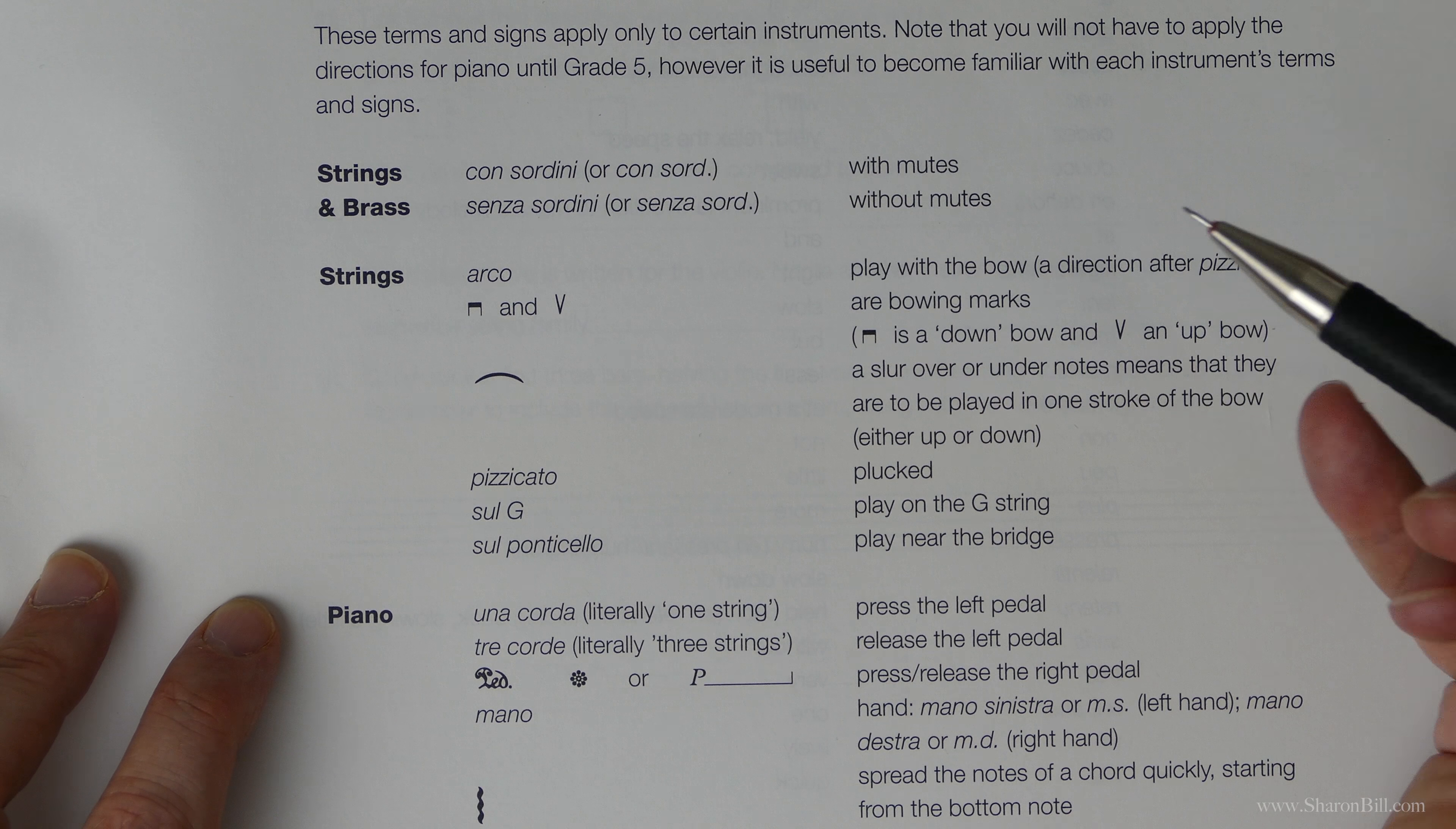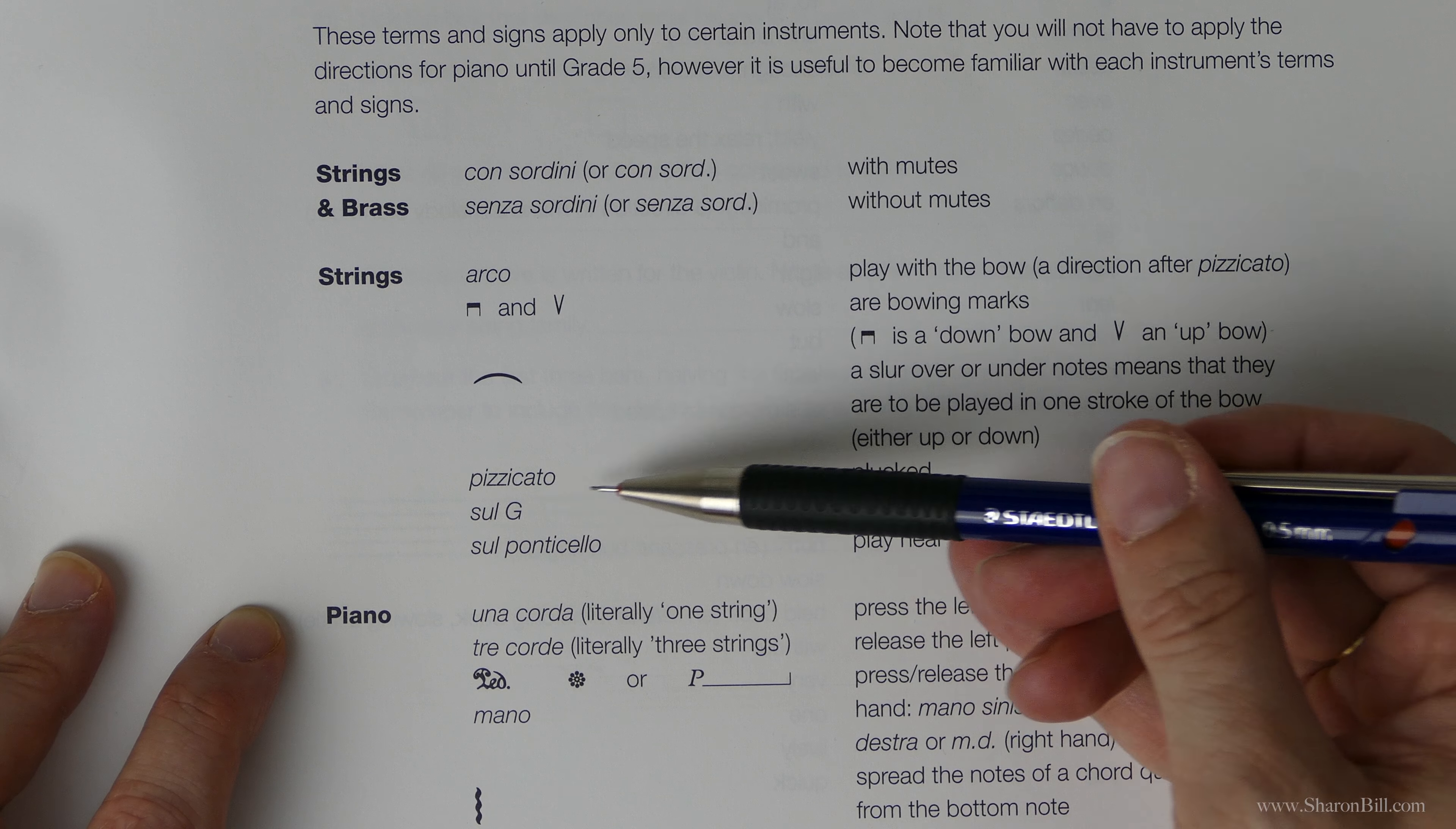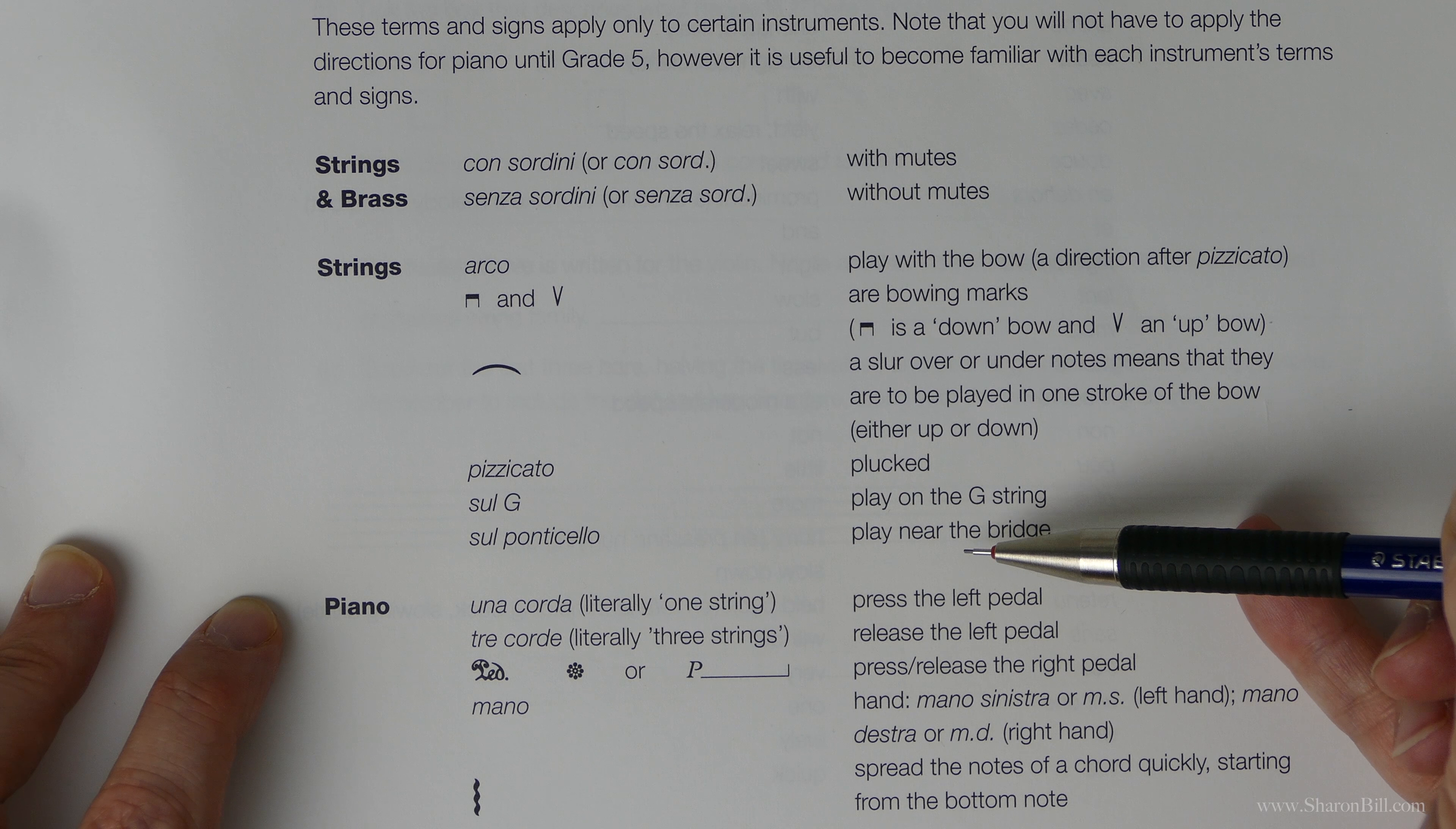Of course strings are played with a bow—the violin, viola, cello and double bass. So we need to learn about these bowing directions, or also if there's no bow used and it's pizzicato plucked, we need to think about which strings are being played. And also sometimes we can be told where to play on the instrument as well, playing nearer to the bridge.